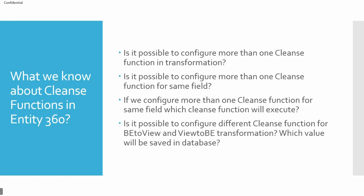At the end of this session you will be able to understand whether it is possible to configure more than one cleanse function for a given transformation. We know that there are three types of transformation which we can configure for the Entity 360 application — view to business entity, business entity to view, and business entity to business entity.